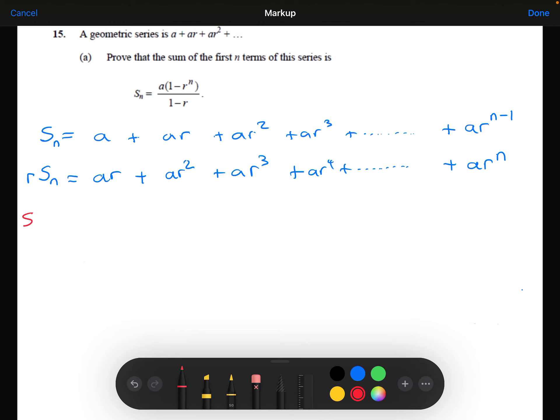And the reason why that's a good thing to do is because I will then have AR take away AR. They're going to cancel out and be zero. I'll have AR squared minus AR squared. They're going to cancel out and be zero. In fact, all of these terms in the middle are going to cancel out and give me zero.